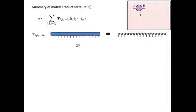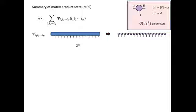If we assume that each tensor has a finite number of parameters independent of n, the system size — specifically we have bond indices alpha and beta, which take chi different values, and a physical index taking d values — then it's clear that each tensor has d·chi² parameters. Therefore the total number of coefficients is only proportional to n. So we have an efficient representation of the wave function.